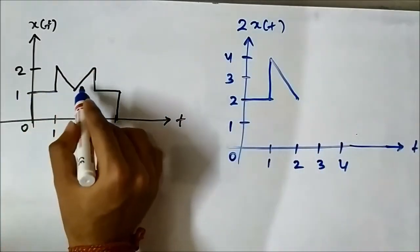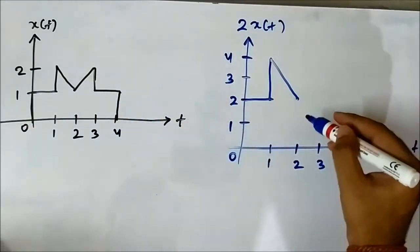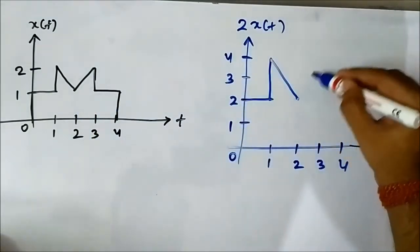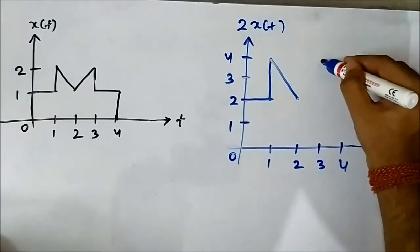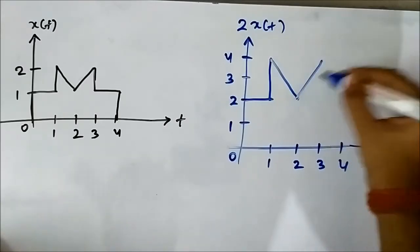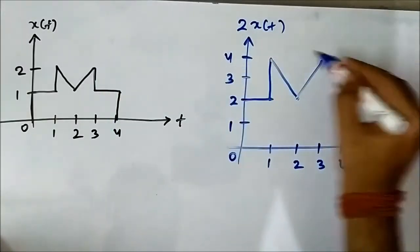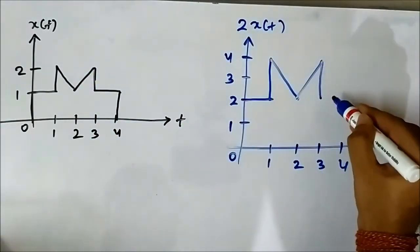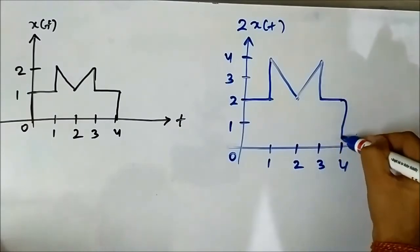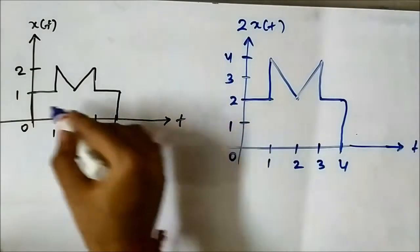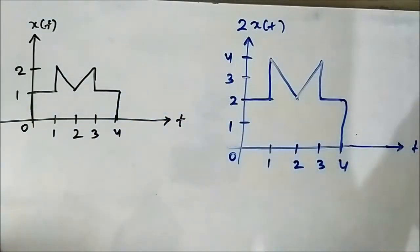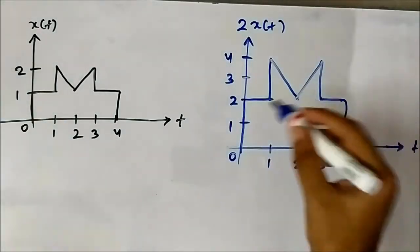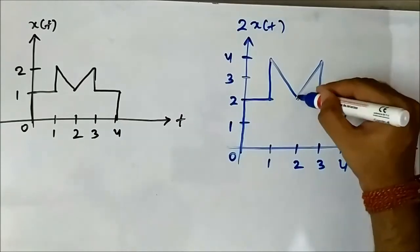We are just multiplying the amplitude by 2 at each time instant. At t=3 the reference signal increases from 1 to 2, so here it will increase from 2 to 4. Then it drops down from 2 to 1 in the reference signal, so here it will be from 4 to 2, and the same way it decreases from 2 to 0. Here it is 1 to 0, so here it will be from 2 to 0. This is the amplified signal.